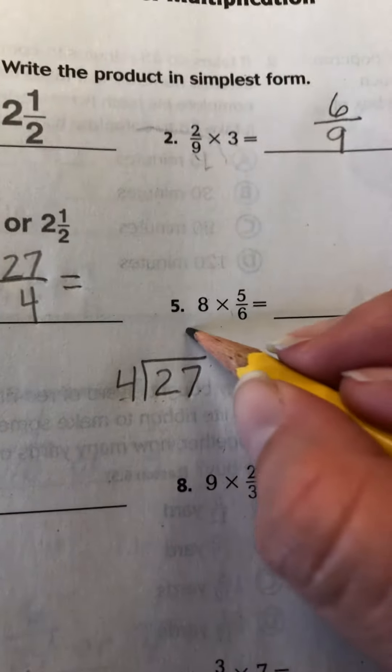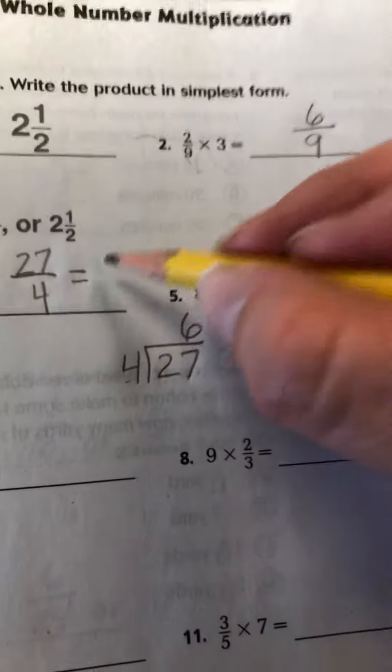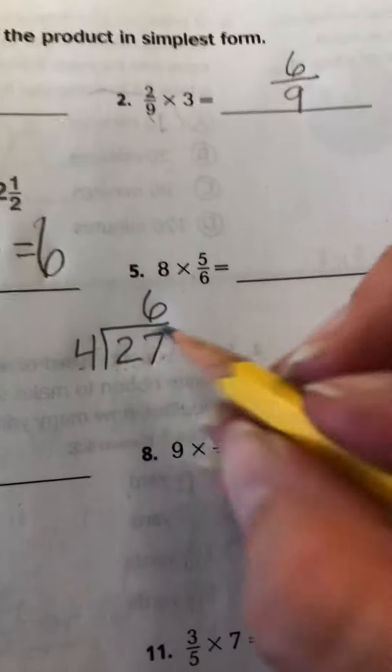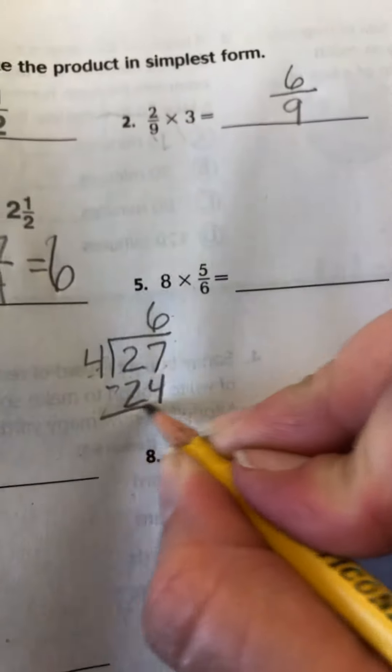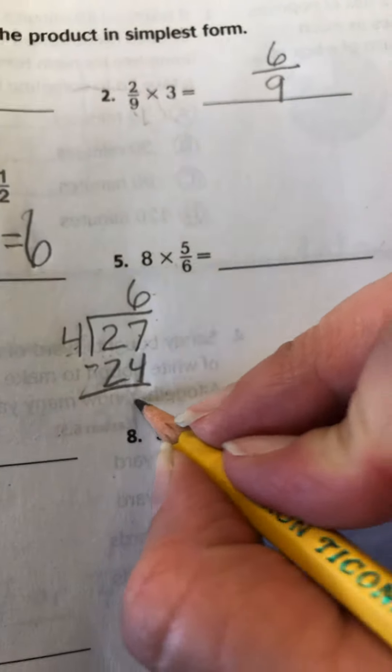4 goes into 27 six times. So that 6 becomes my whole number. 4 times 6 is 24. 27 minus 24 is 3.